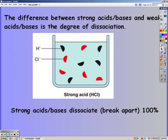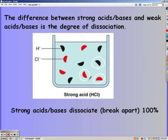The difference between strong acids and bases and weak acids and bases is the degree of dissociation or how much it breaks apart. Strong acids and bases dissociate or break apart 100%. If you look in the picture, all of the hydrogen and chlorine have been broken apart. There's no longer any HCl still together. That means it's a strong acid.